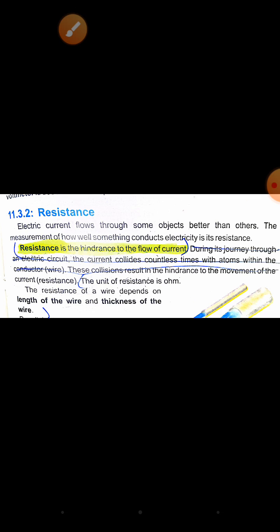Current flows countless times through atoms within the wire through which electricity passes. These collisions result in a hindrance to the movement of the current. The collisions create resistance as current keeps flowing through the line.